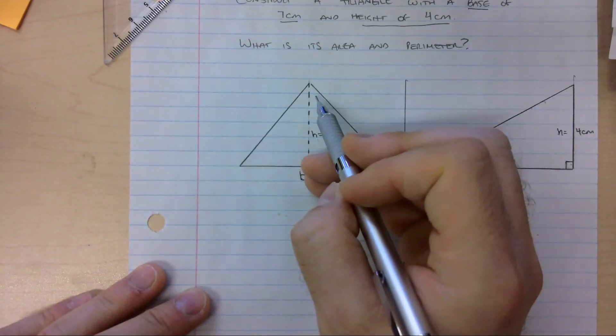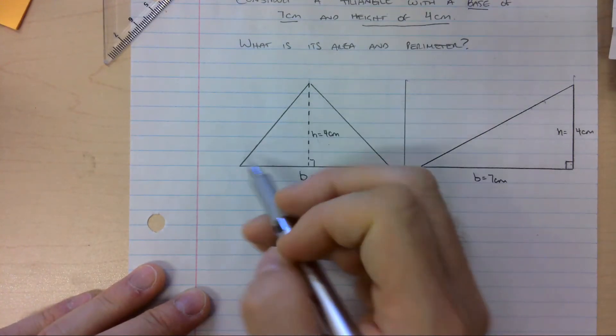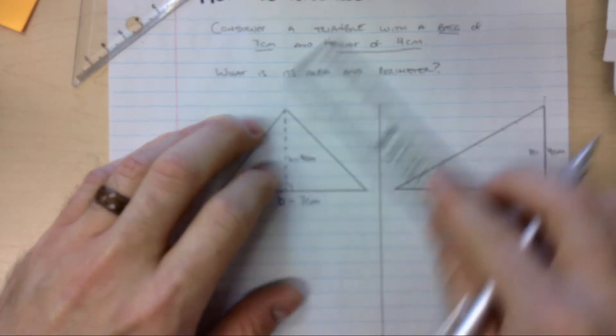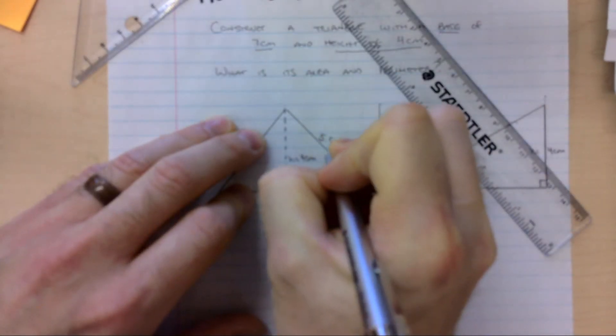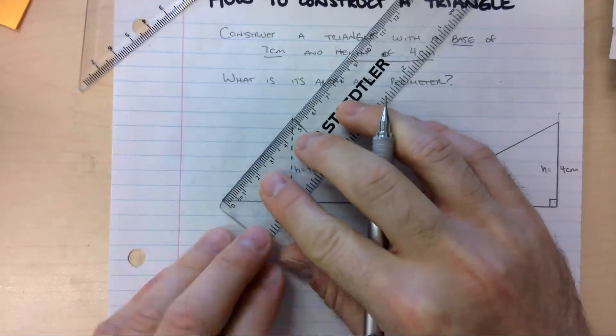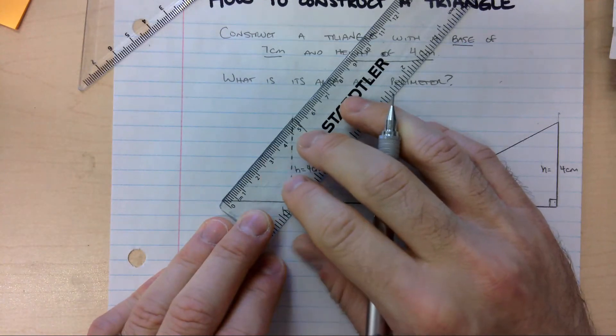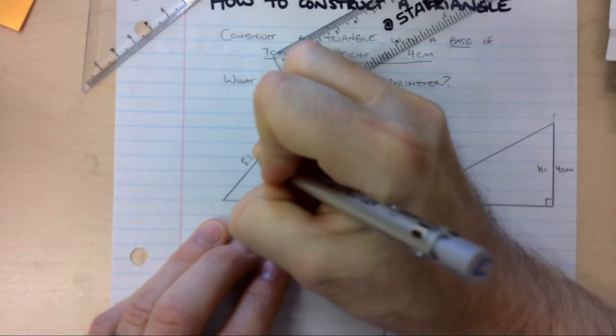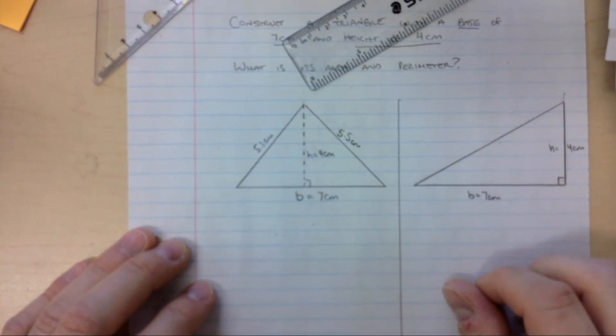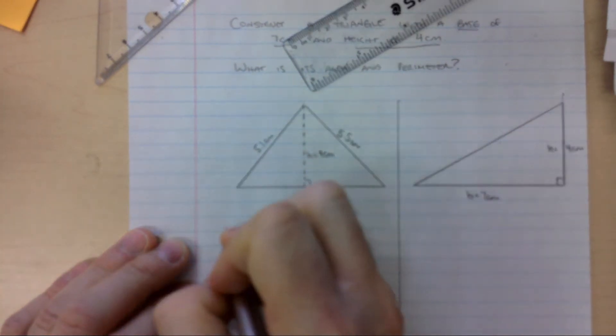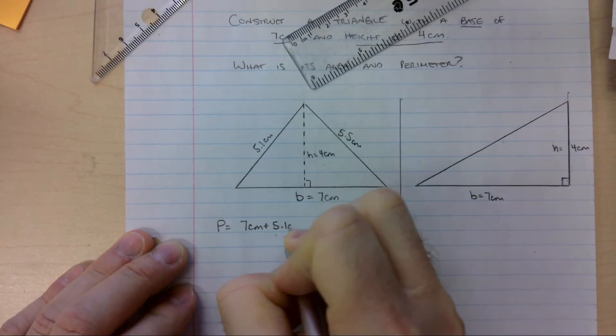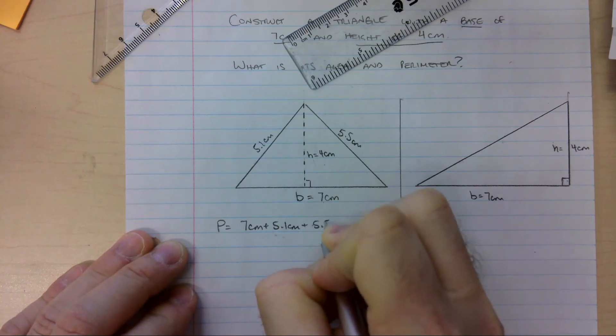Problem is, I didn't actually measure this side and I didn't actually measure this side. So I'm going to go ahead and do that quickly right now. This is exactly 5.5 centimeters. And this side length is, looks like it's 5.1 centimeters. And I already know that my base is 7. So to find out what my perimeter is, I'm going to add 7 centimeters plus 5.1 centimeters plus 5.5 centimeters.